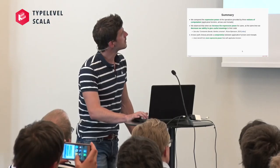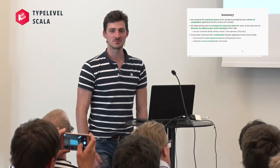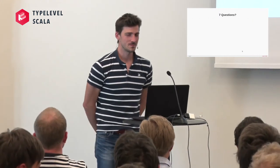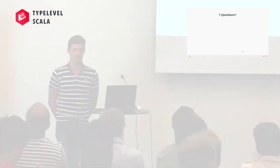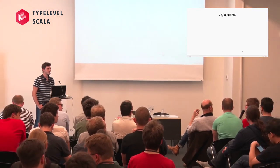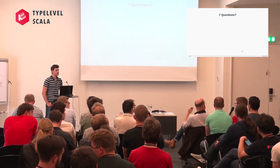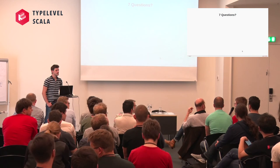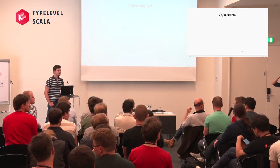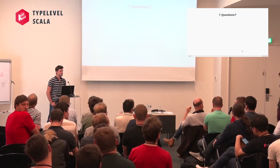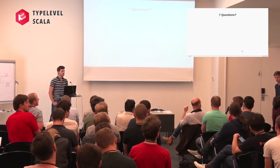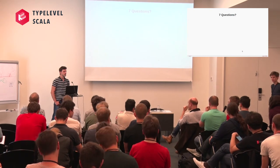As a summary: we compared the expressive power of operations provided by three notions of computation — applicative functors, arrows, and monads. We observe that when we increase the expressive power from the user's point of view, we simultaneously reduce the space of possible interpreters for the language. There's also a very interesting talk from Renard about this topic. We saw that arrows can provide an interesting middle ground between applicative functors and monads. Do you have any questions?